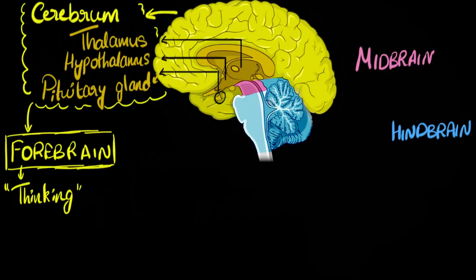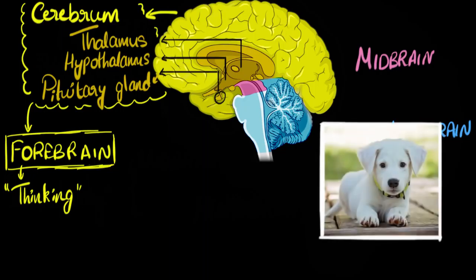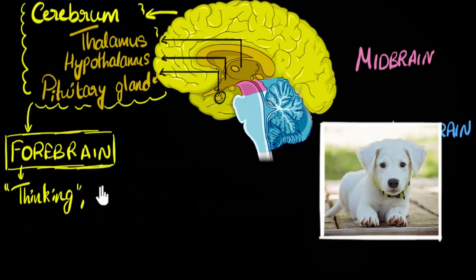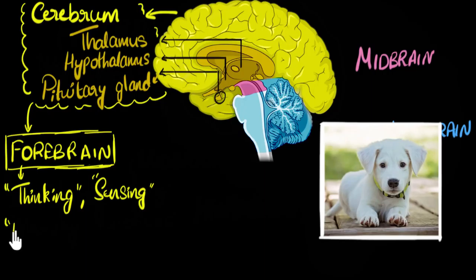What else does your forebrain do? The reason you are able to see this picture is because of your forebrain. You may wonder, 'it's my eyes,' but the eyes send the signal to the brain, and it's your forebrain that does the processing — that's why you can see it. Similarly, you can hear because of your forebrain. All five senses you can sense because of your forebrain — so one important function is sensing. And the reason you can identify this picture as a puppy rather than a donkey or tiger is because of your memory. Your forebrain handles memory and learning as well.